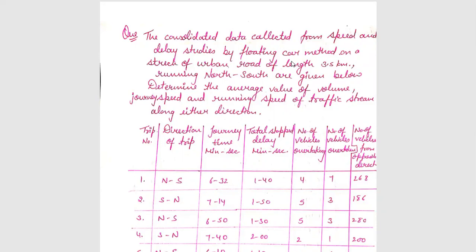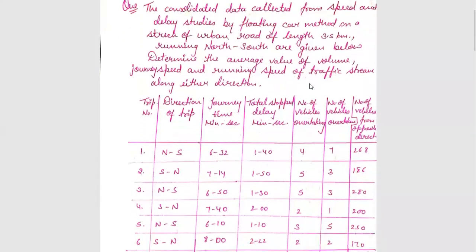The question states: the consolidated data collected from speed and delay studies by the floating car method on a stretch of urban road of length 3.5 km running north to south are given below. Determine the average value of volume, journey speed, and running speed of traffic stream along either direction. The data given includes trip number, direction of trip, journey time in minutes and seconds, total stop delay in minutes and seconds, number of vehicles overtaking, number of vehicles overtaken, and number of vehicles from the opposite direction.